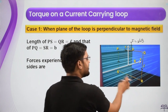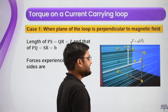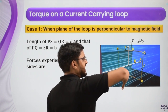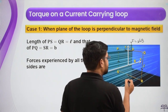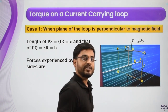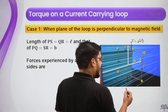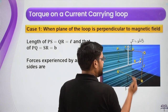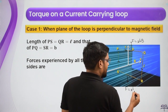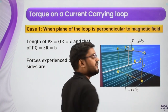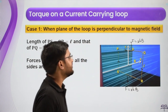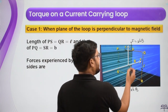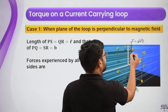The force on segment SR is also L cross B. Since B is that way, the force is downward with magnitude IbB. So these two forces are equal, opposite, and they are acting exactly in the middle of their respective wires.